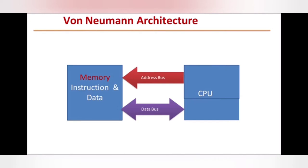Here you can see the memory and CPU. The instruction and data both are present in the same location of the memory. The CPU is accessing the memory through the address bus and the data bus. So the processing speed is very slow as the memory is being shared, and the data bus and address bus are shared.